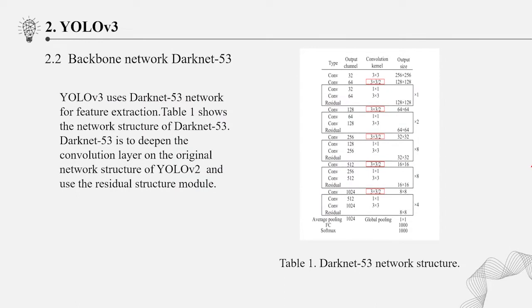Backbone network, DarkNet-53. The network uses continuous 3x3 and 1x1 convolution kernels. 1x1 convolution kernel is used to reduce the dimension and 3x3 convolution kernel is used to extract features. Multiple convolution kernels are used alternatively to reduce the dimension and extract features. In Table 1, a total of five times of reduction, the area becomes 1/32 of the original. When the size of input feature map is 416 times 416, the output is 13 to 13.